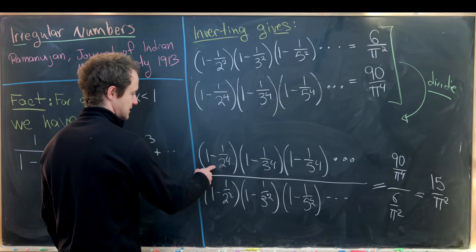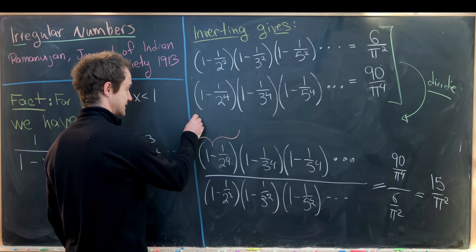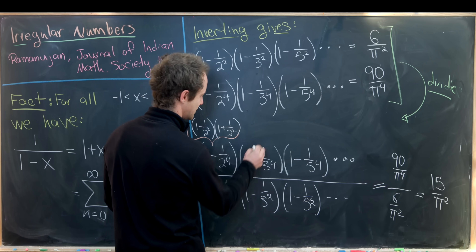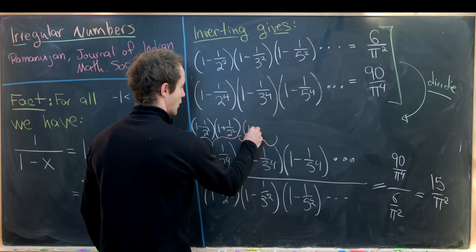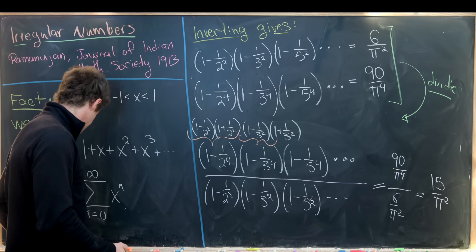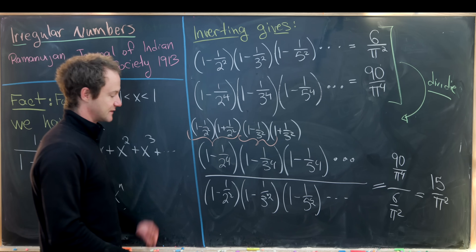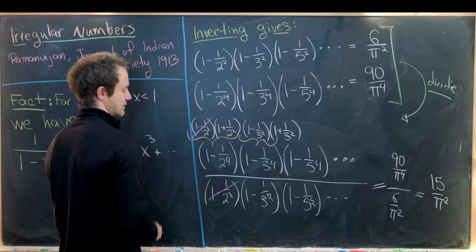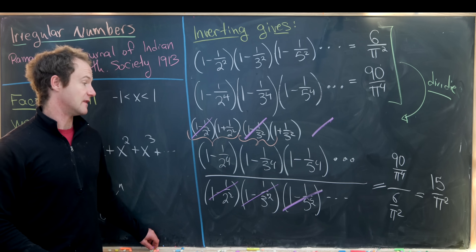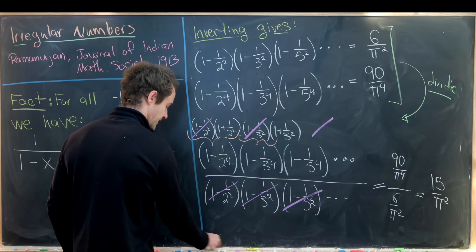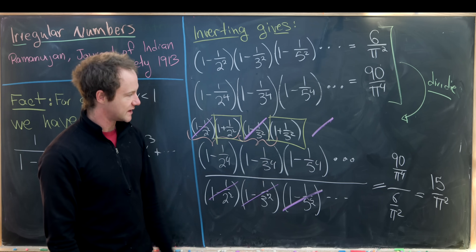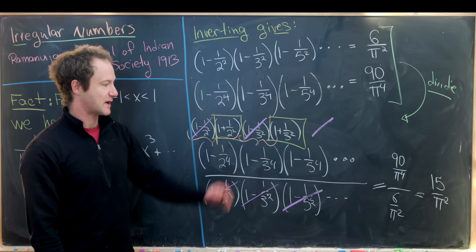Now it's more interesting to see what happens when we simplify the left-hand side. We can factor the first term as a difference of squares: 1 minus 1 over 2 squared, times 1 plus 1 over 2 squared. Similarly, the second term factors as 1 minus 1 over 3 squared, times 1 plus 1 over 3 squared, and all subsequent terms factor the same way. Now the 1 minus 1 over 2 squared cancels with the denominator, the 1 minus 1 over 3 squared cancels, and so on — leaving us with only the sum terms: 1 plus 1 over 2 squared, times 1 plus 1 over 3 squared, times 1 plus 1 over 5 squared, and so on.